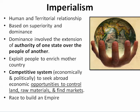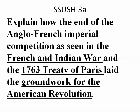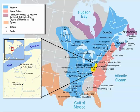What we want to talk about is the Anglo-French imperial competition as seen in the French and Indian War. What happened in the French and Indian War? What caused it to start? We'll look at that first, and then we'll talk about what was the end result — what was the impact of it.